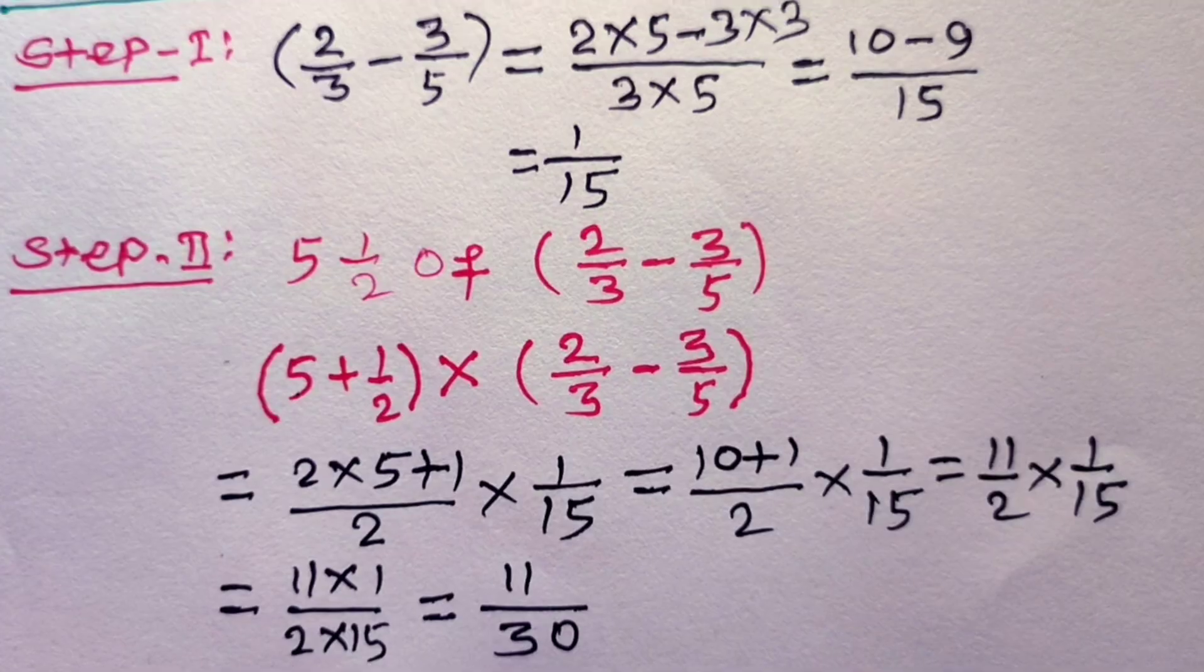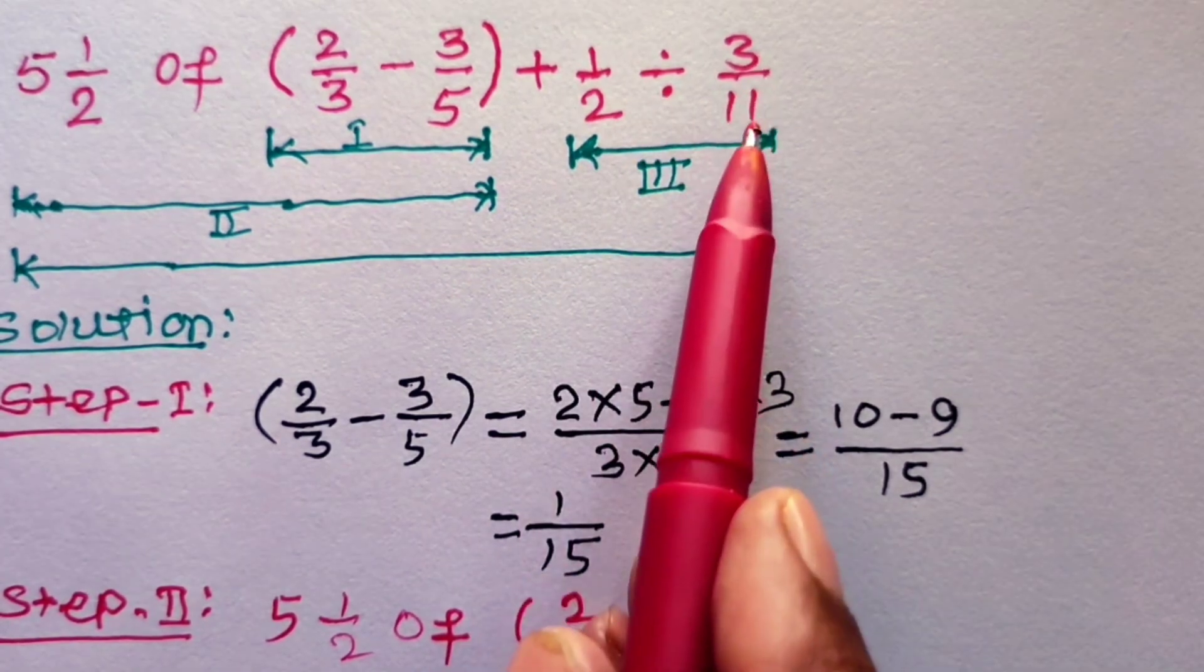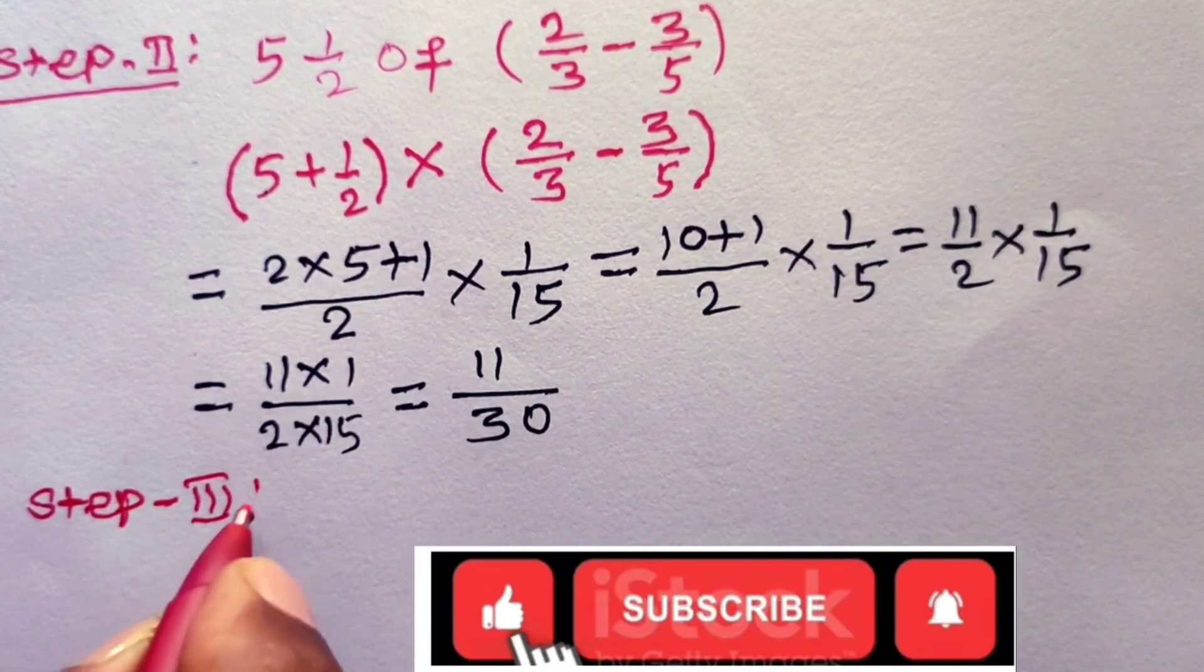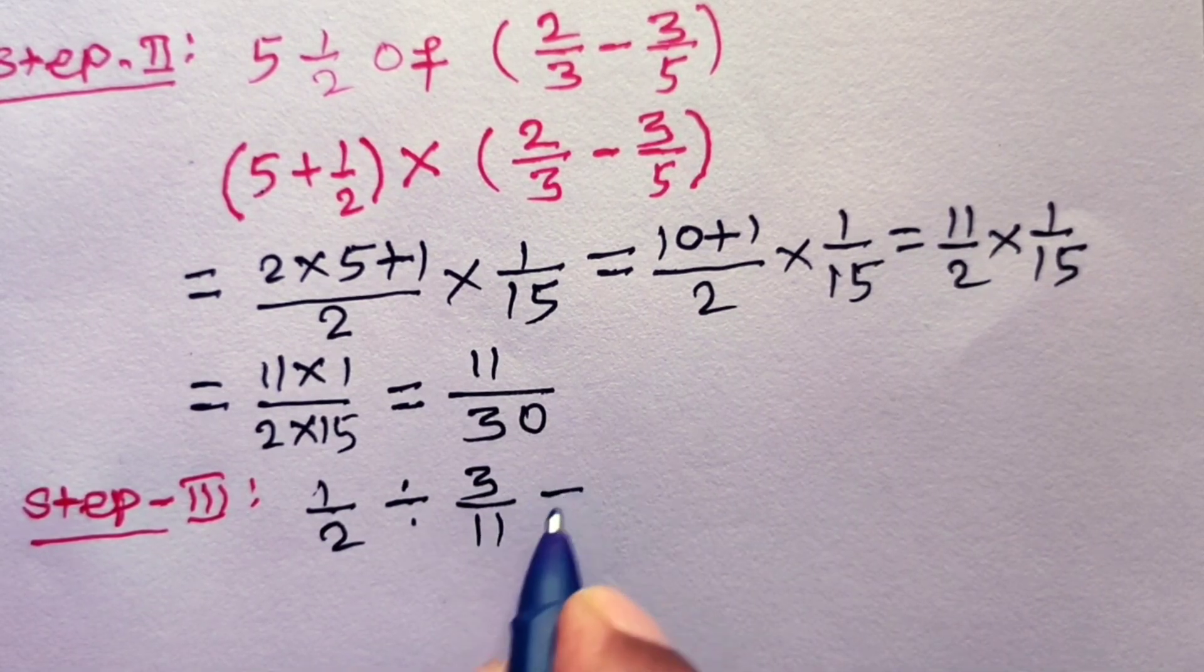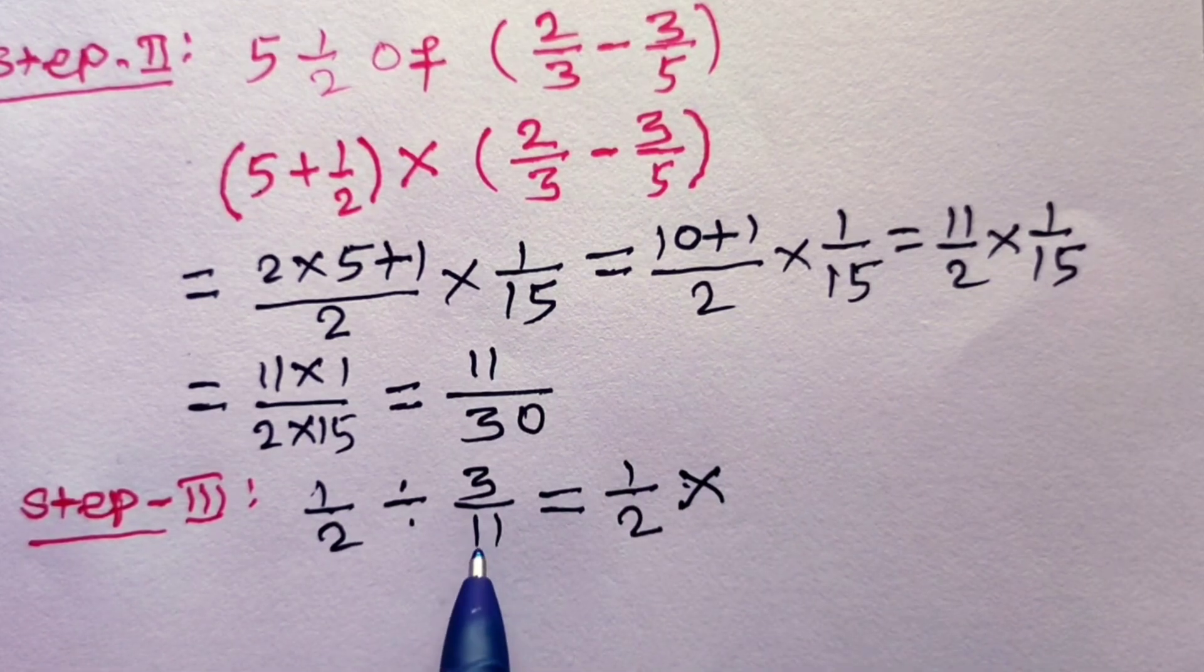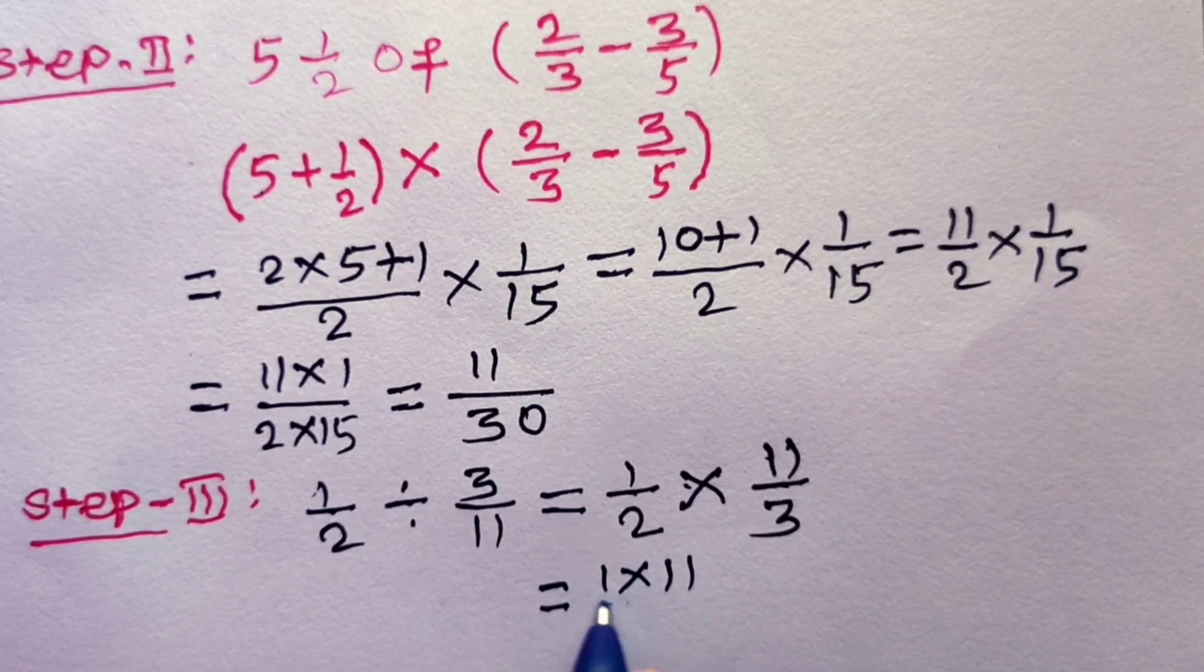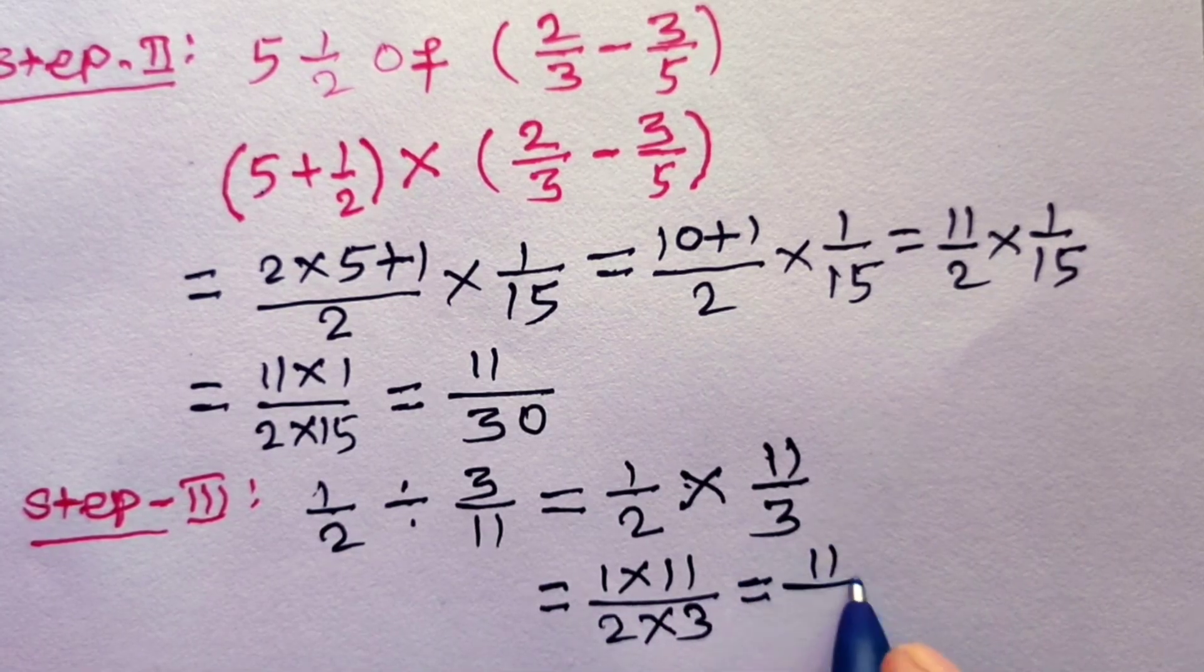Let us solve step number 3. Step number 3 is 1/2 divided by 3/11. Let us find this value. 1/2 divided by 3/11, this is equal to 1/2. This symbolic notation we can replace by multiplication symbol, and then 3 upon 11 we can take it as reciprocal, 11 upon 3. This is equal to 1 into 11 over 2 into 3. This is equal to 11/6.